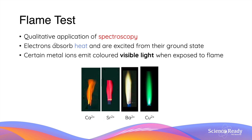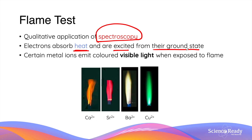Now back to the flame test. The flame test is a qualitative application of spectroscopy — the interaction of radiation and matter. In the flame test, electrons in the metal atoms or ions absorb energy in the form of heat and as a result are excited to a higher energy level from the ground state. For certain metal ions, when the electrons return to the ground state after excitation, they emit colored visible light, and depending on the color we are able to identify the presence of a particular metal ion.